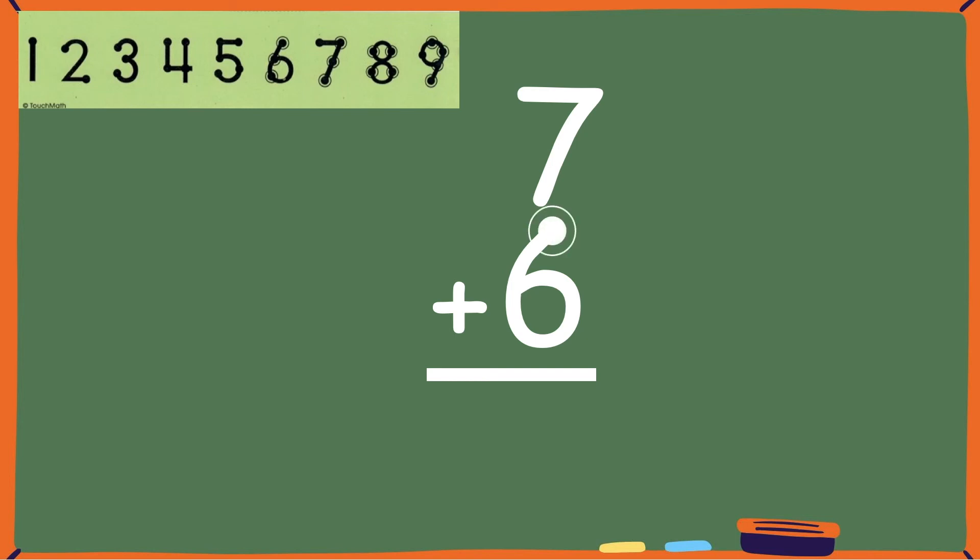Eight, nine, ten, eleven, twelve, thirteen. So the sum or answer is thirteen. Seven plus six equals thirteen.